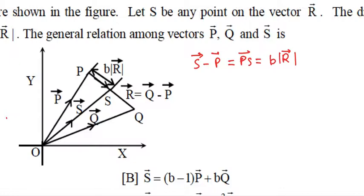So we can write in r cap: S minus P equals mod of R into r cap, which is equal to b R vector. And what is the relation? Q minus P is equal to vector R.